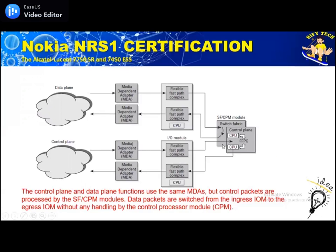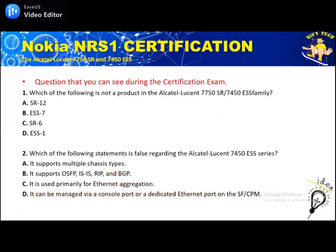Now let's look at certification exam questions. Question one: which of the following is not a product in the Alcatel-Lucent 7750 series? We know the 7750 SR has three chassis types: SR-1, SR-7, and SR-12. The same applies to the 7450 ESS — it also has 1, 7, and 12. Therefore SR-6 is not part of the 7750 SR series. The answer is C.